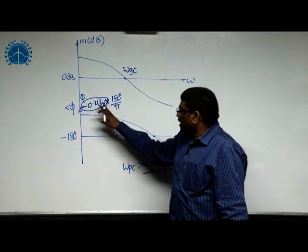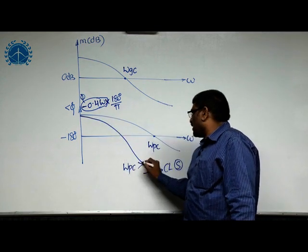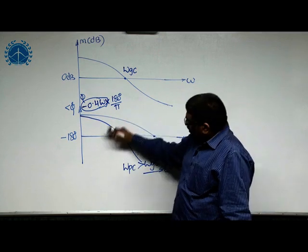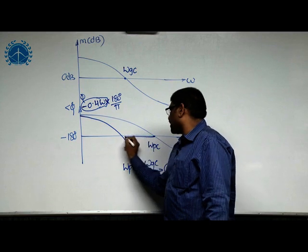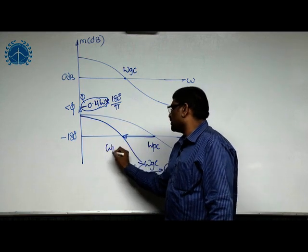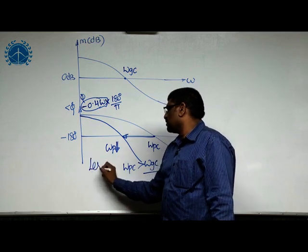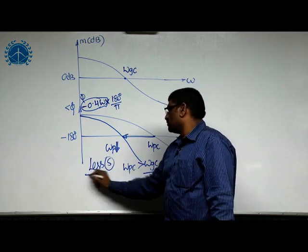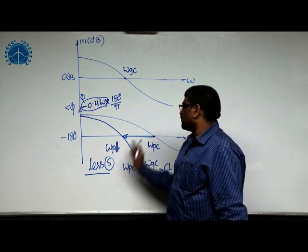As omega increases, the angle increases, meaning we get more negative angles. Then automatically omega_pc decreases. Once omega_pc decreases, the system becomes less stable, meaning the phase margin decreases.